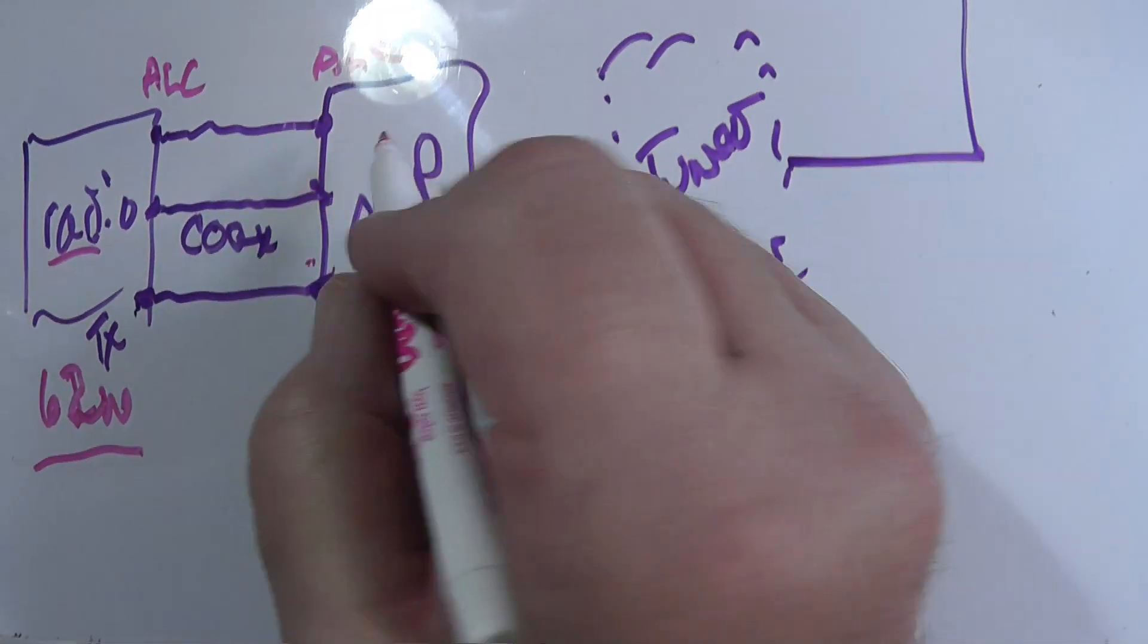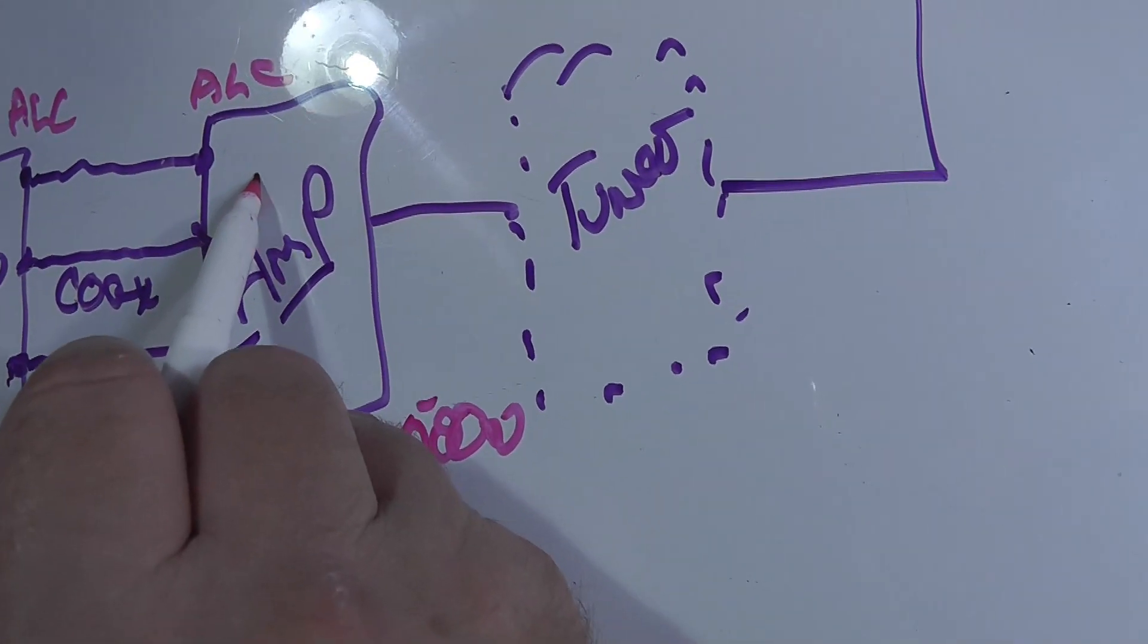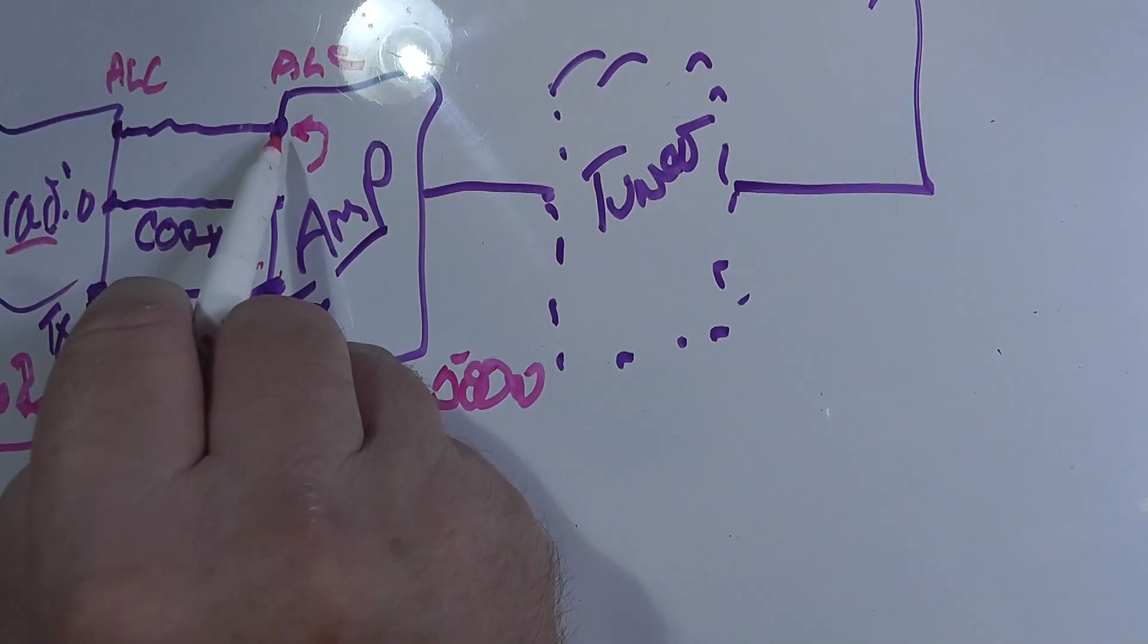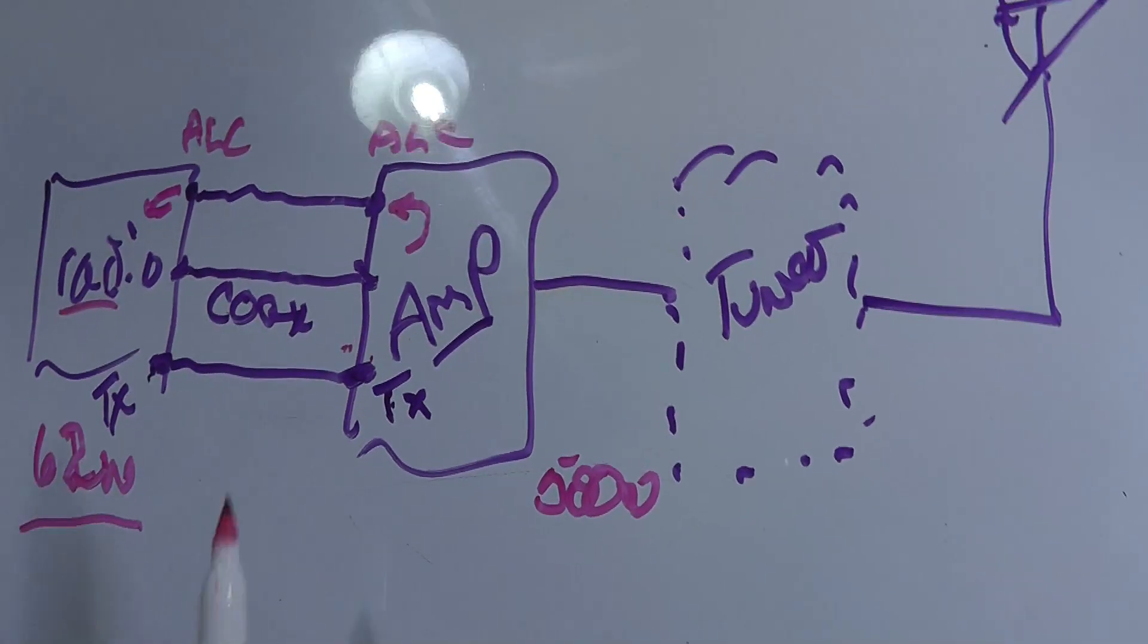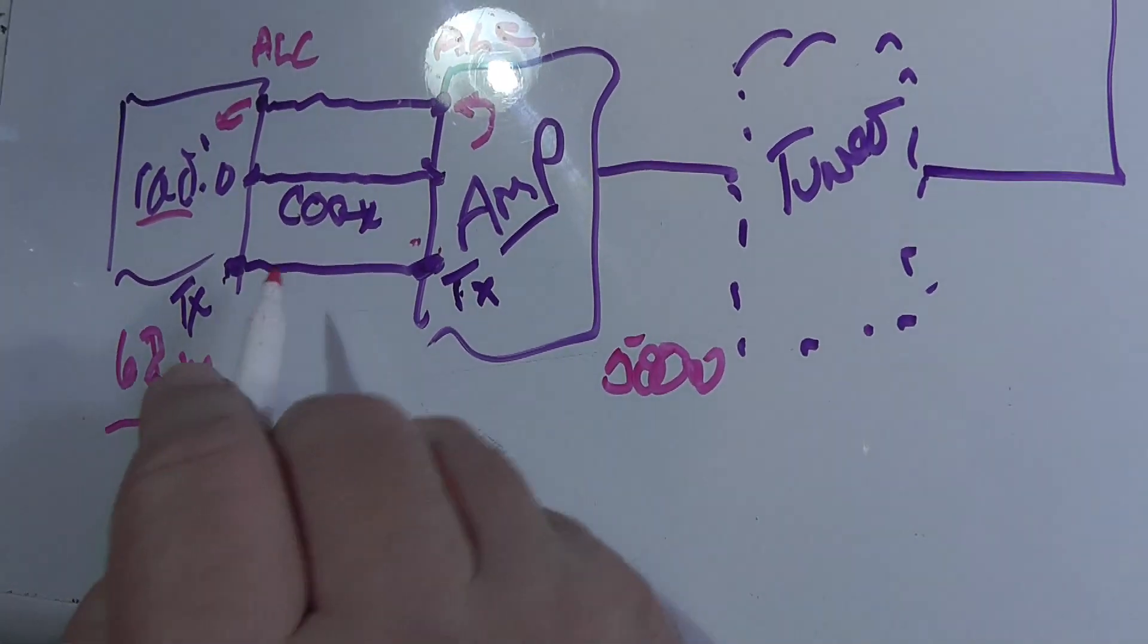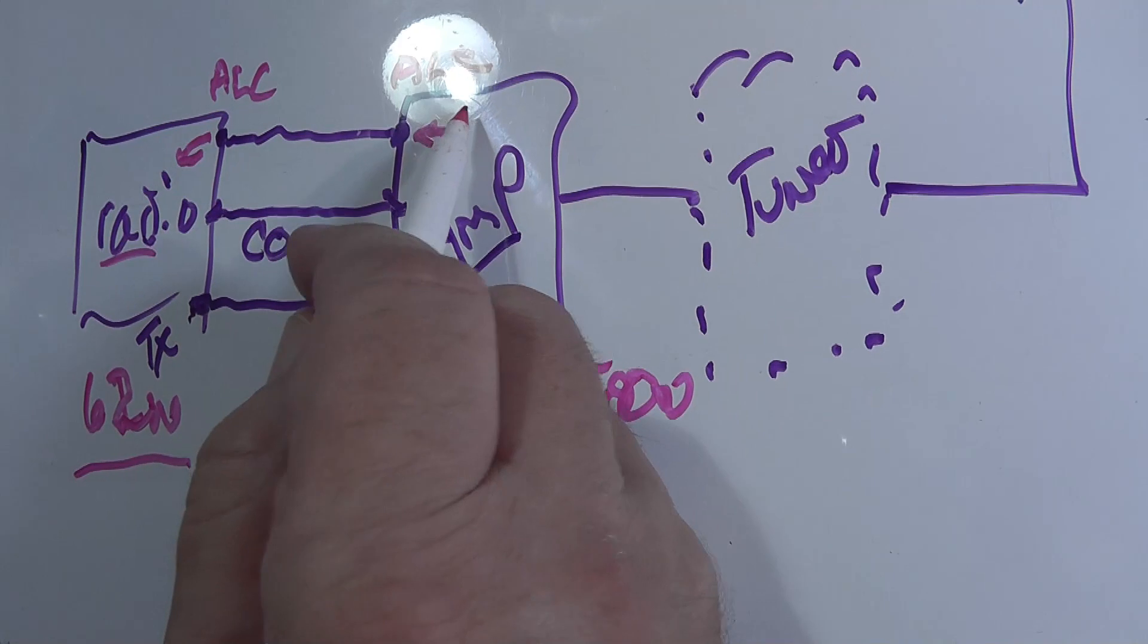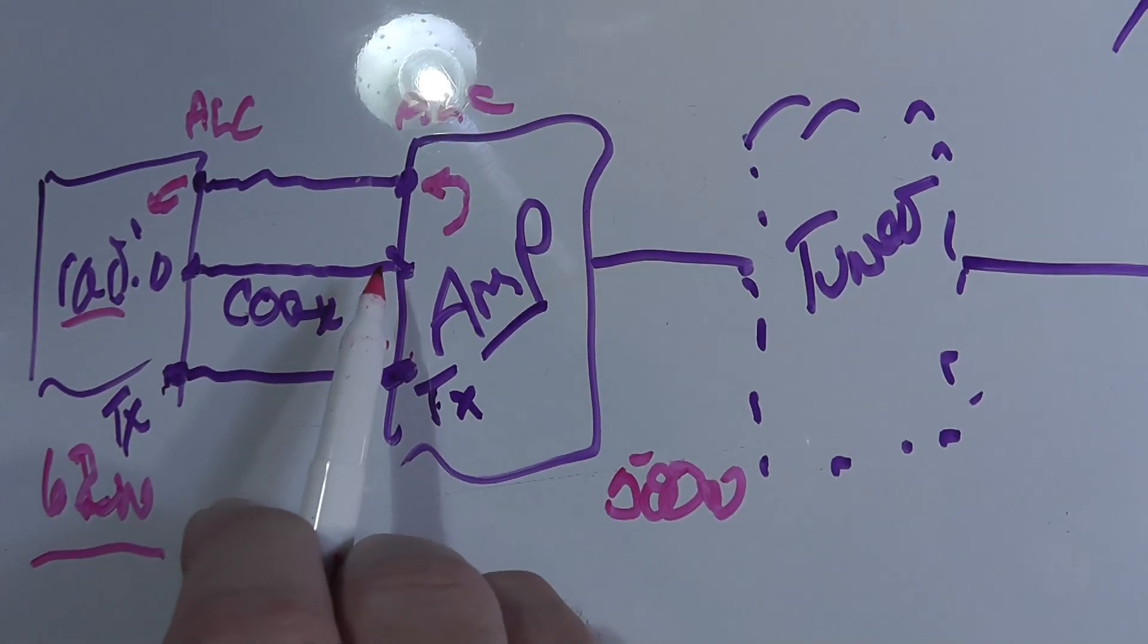What an ALC does is the amp, if it's getting too much power, it sends feedback through the ALC over to here. And this reduces the power out of the radio. So these are the three connectors to tell it you're transmitting for this, for the amp to tell the radio to back off. And of course, your coax for the main signal.